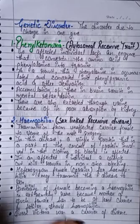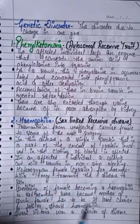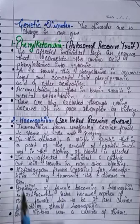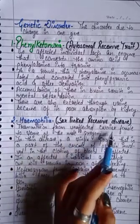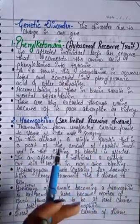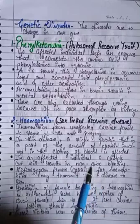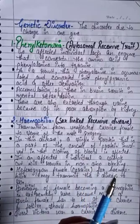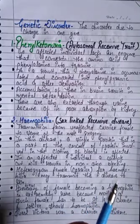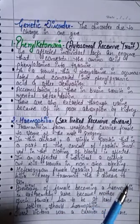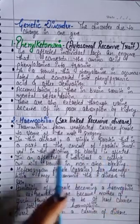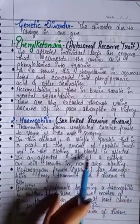The second disorder is hemophilia. It is a sex-linked recessive disorder. It is transmitted from an affected carrier female to some of the male progeny — if the female is a carrier, it can be transmitted to her sons.